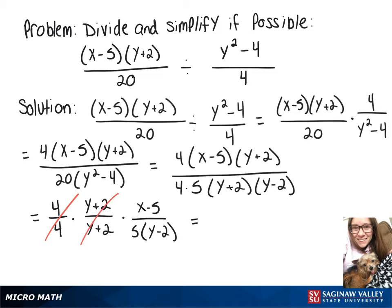That leaves us with x minus 5 over 5 times y minus 2. And when you distribute the 5 we'll get x minus 5 over 5y minus 10.